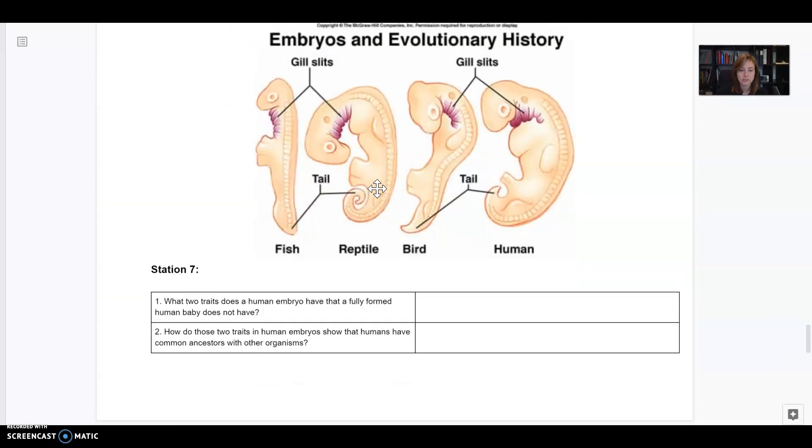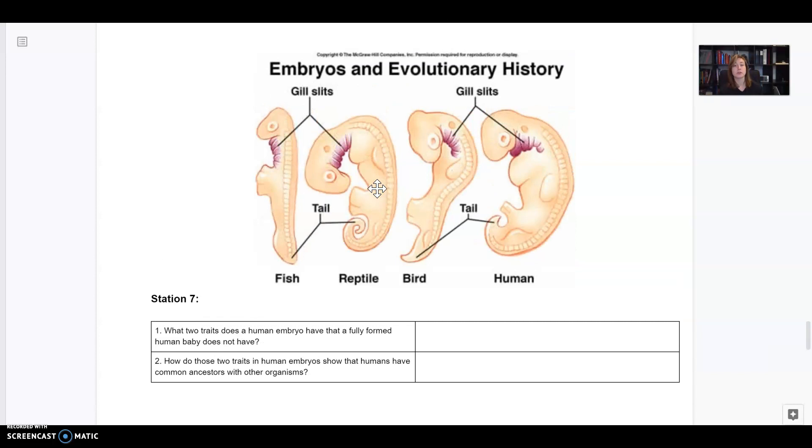Now let's go on to station seven. This one is showing you embryos, which we learned about a little while ago. Embryos are a baby when it's first developing before it even starts to look like the organism it's going to be born as. So here we have a fish embryo, a reptile, a bird, and a human embryo. They actually all look pretty similar. And because embryos of different species all look really similar, that is evidence of a common ancestor from millions of years ago.